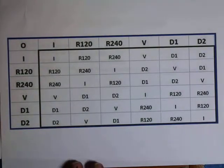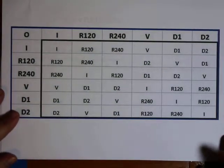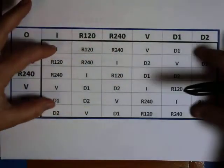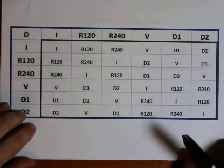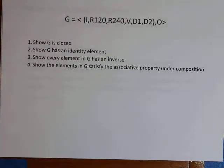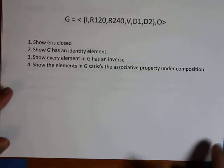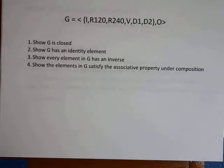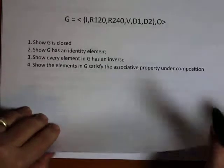I have made the table of all possible compositions on these group elements. All the resulting answers are also members of the set — I couldn't possibly get a triangle that isn't already a group element. To prove this group is actually a group, I need to show four properties: closure, identity element, inverse element for every element, and the associative property under composition of functions.